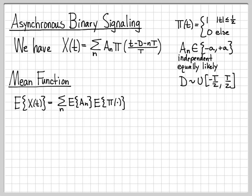So let's choose one of these to work on. What about the expected value of A_n? Well, A_n is a random variable that toggles between minus a and a independently and equally likely.